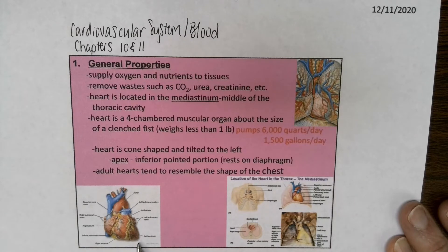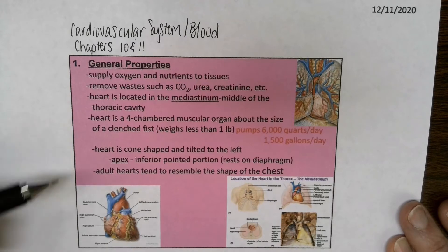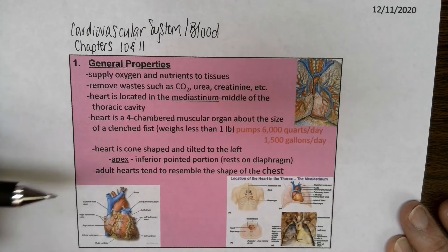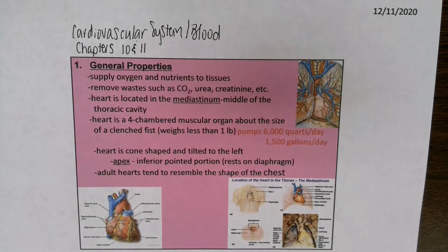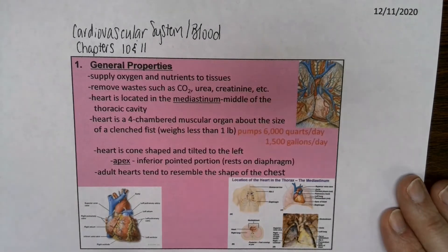The heart is cone-shaped and tilted to the left. The apex region is the inferior portion of the heart, and that rests on the diaphragm. Typically we say an apex is a point — like the top of a mountain is the apex or the pointed region. The base would be at the ground, and this region along here is the base, which we'll talk about again eventually.